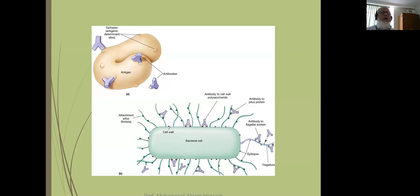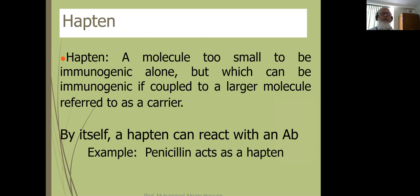This is a bacterial cell structure — flagella, capsule, and other cell structures all serve as antigenic epitopes.